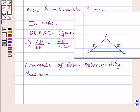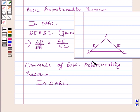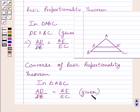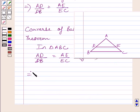Now let us understand the converse of basic proportionality theorem. It states that if a line divides any two sides of a triangle in the same ratio, then the line is parallel to the third side. That is, if in a triangle ABC, DE is a line dividing AB and AC in the same ratio, then DE is parallel to BC. This is the converse of basic proportionality theorem.